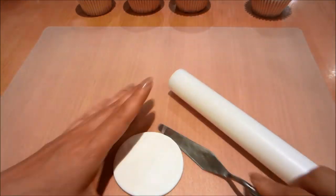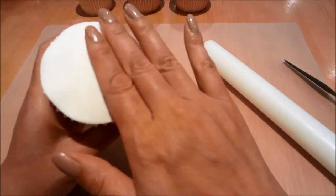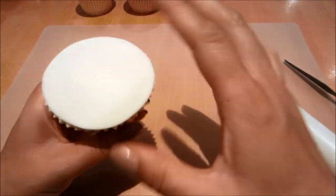Now onto the soccer ball cupcake. I've rolled out some white fondant, and again placing it on top of my cupcake and smoothing it over.